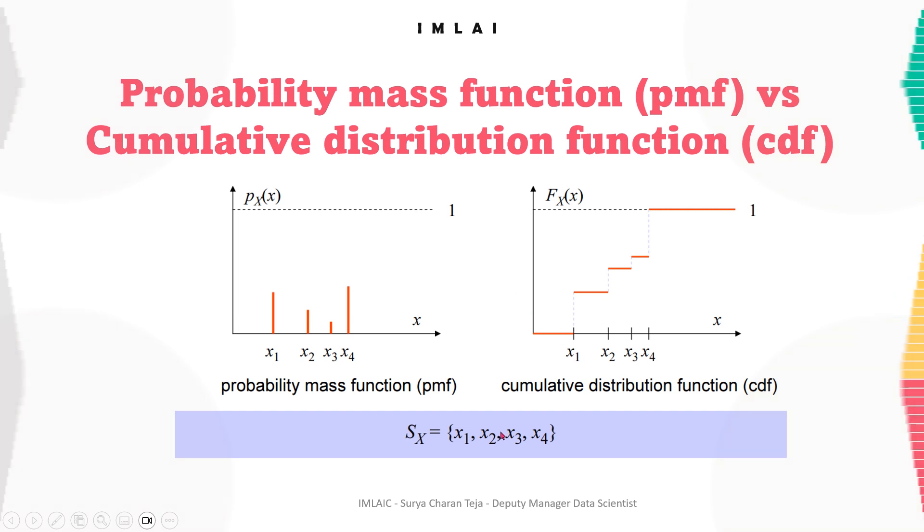But when it comes to the cumulative distribution function CDF, at x1 this is the x1 probability. After that, x1 got added to x2, so x1 plus x2 become this level. Then this plus this has become this level at x3, and you can clearly see the cumulative. Finally, the last event got the probability which is equal to one.